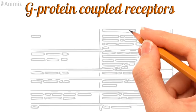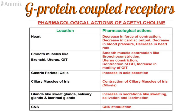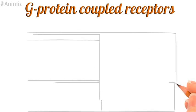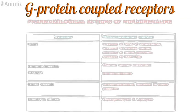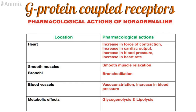This receptor is also present at many locations in the body. When acetylcholine, which acts as a ligand, binds to this receptor, it gives various pharmacological actions as given in the table. Similarly, when noradrenaline binds to this receptor, it also gives various pharmacological actions as given in the table.